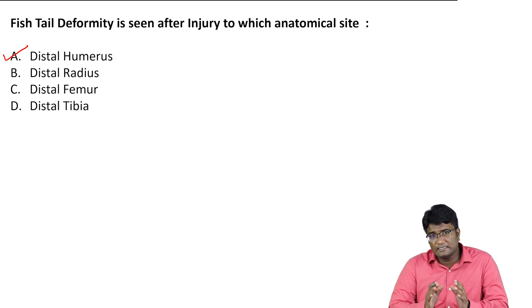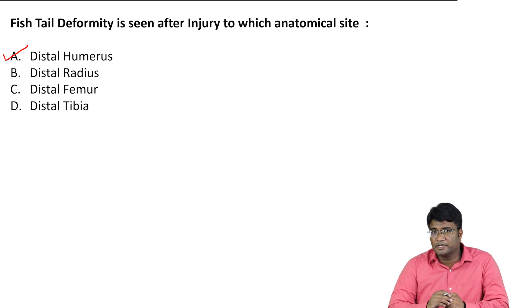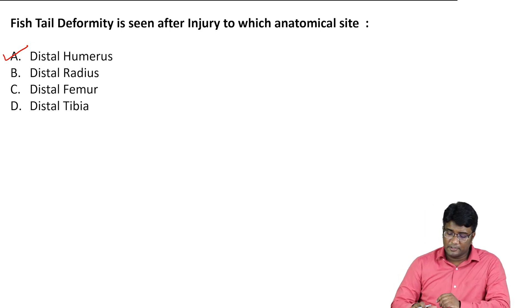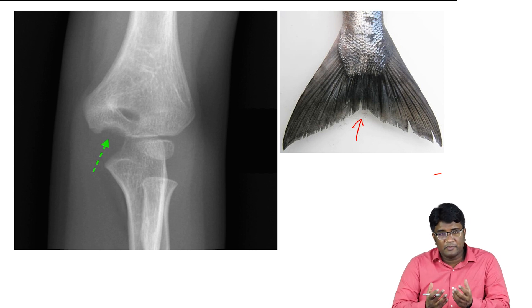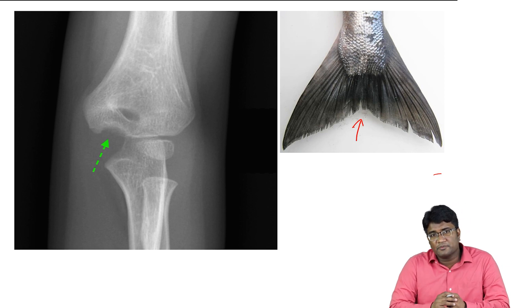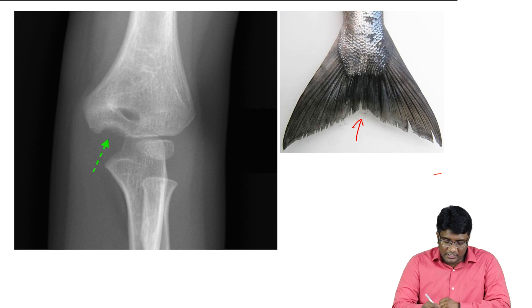Let me show you the images. This is how a fish tail would appear — there would be a central resorption. In the same fashion, in the bone, you are seeing this central resorption of the trochlea.